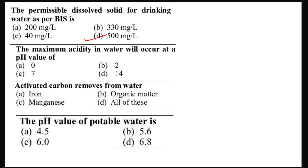The permissible dissolved solids for drinking water as per BIS is 500 mg per liter. The maximum pH value range is 0 to 14. The answer is A. Activated carbon can remove iron, organic matter, and manganese — all of these can be removed by activated carbon. The pH value of potable water is 6.8.